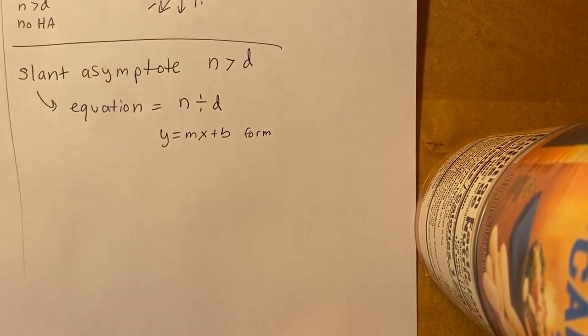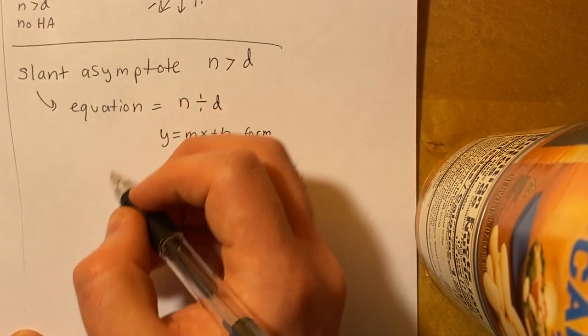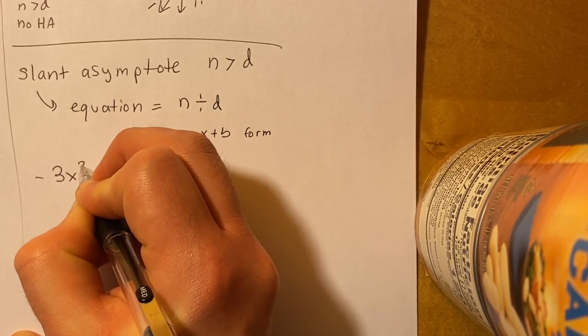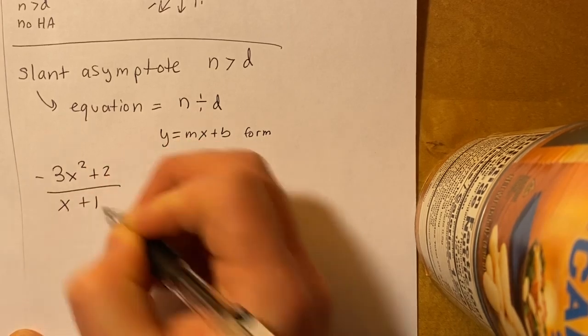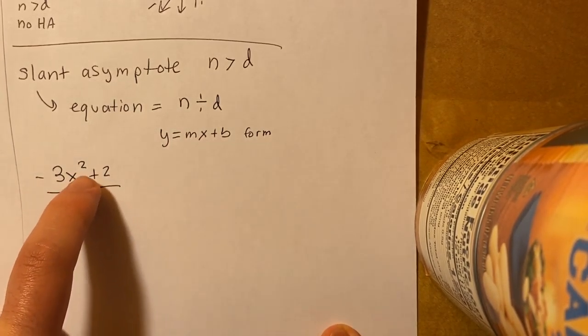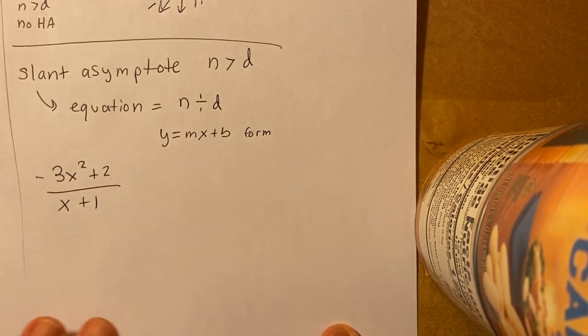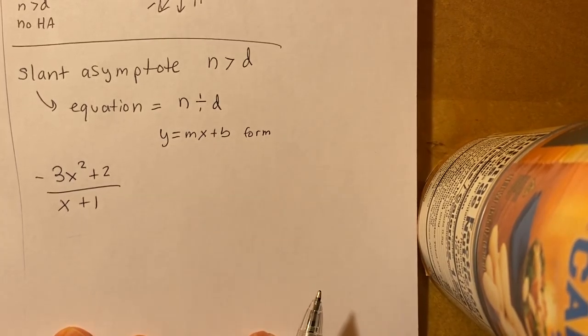All right, so the first equation we're going to do is negative 3x squared plus 2 over x plus 1. Pretty cool. So we know that the degree of the numerator is bigger than the degree of the denominator, so we're going to have a slant asymptote. All right, to find that slant asymptote, we're going to use our good old box. So we're going to divide x plus 1 by this.